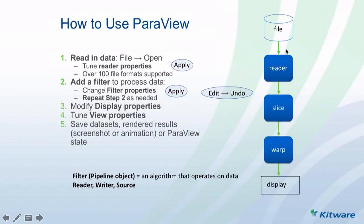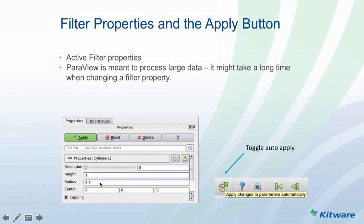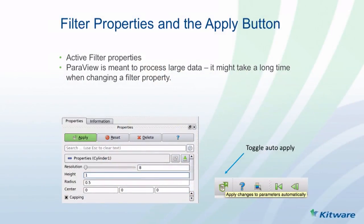The pipeline has a reader that reads the file, a slice filter, and then a warp filter. Every time you change properties from your filter, you have to hit Apply. The reason is ParaView is designed to work with very large data. If you change a property, the processing pipeline has to be re-executed, and that potentially takes a long time. So we split this into two steps — you change a property and then explicitly hit Apply to trigger the work. If you know you are working with small data, you can toggle the auto-apply option.